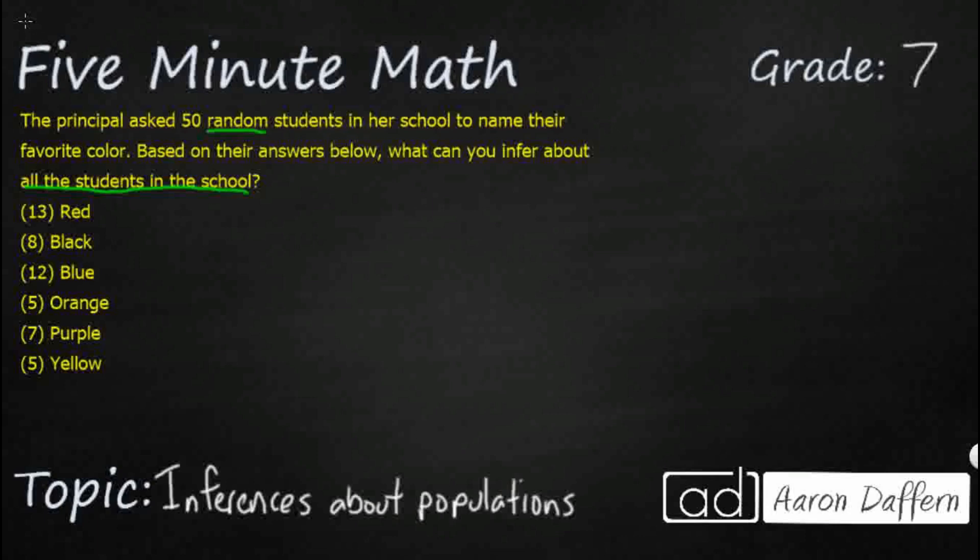Sometimes what data scientists will do is they will just ask random people and then they will make some inferences about how those people represent the larger population. So typically we are going to be able to make some statements on a continuum.